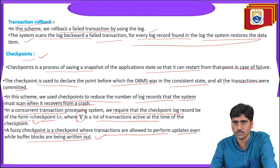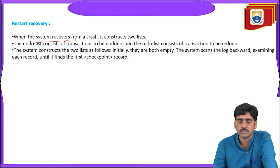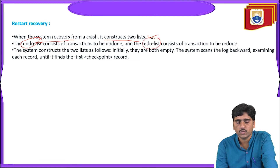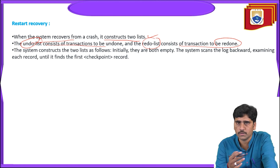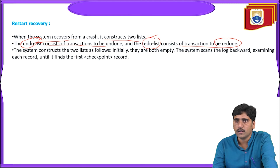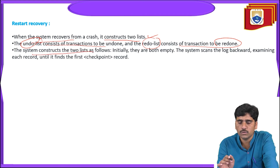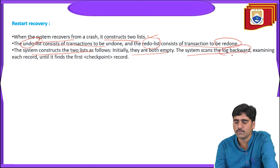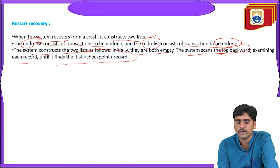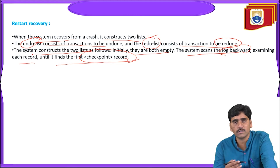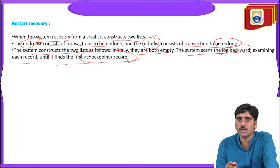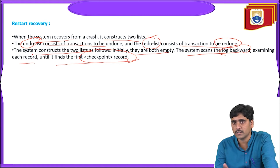The fourth method is restart recovery. When the system recovers from a crash, it constructs two lists: an undo list and a redo list. The undo list consists of transactions to be undone and the redo list consists of transactions to be redone. The system scans the log backward examining each record until it finds the first checkpoint record. If logs are found, the transaction can be restarted or recovered; if logs are not found, you are not able to recover the transaction.